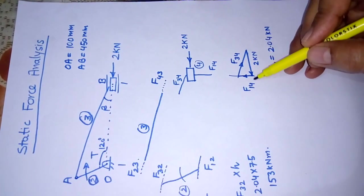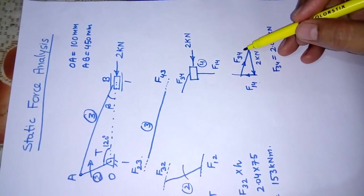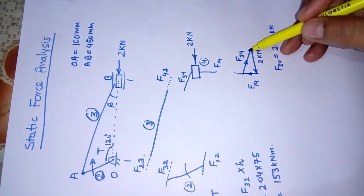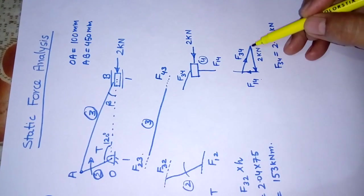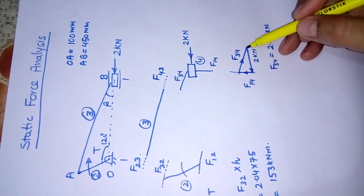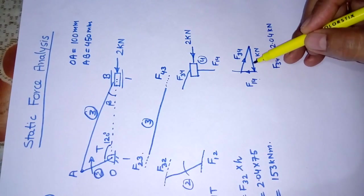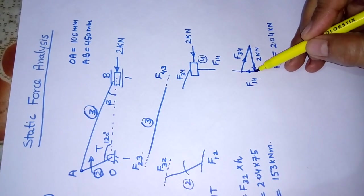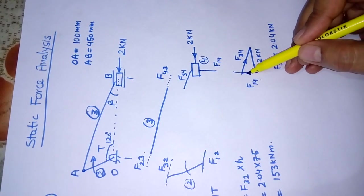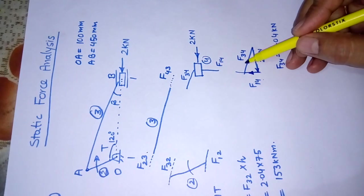We can measure it to find the magnitude of F14 and F34. After knowing the magnitude, we can identify the sense of these forces. As it should be a closed triangle, this 2 kN acts in this direction, so F14 acts upward, then F34 acts like this.